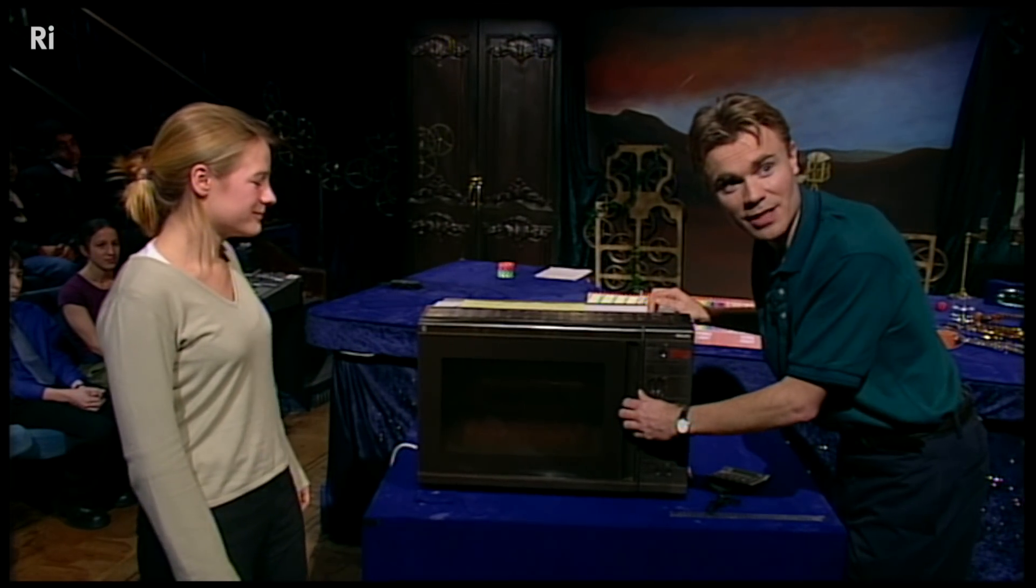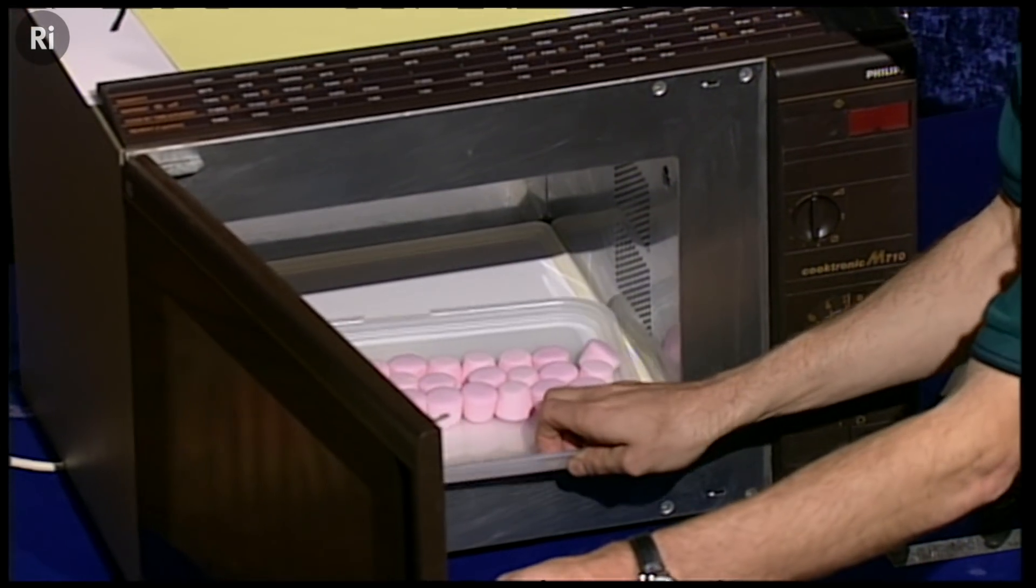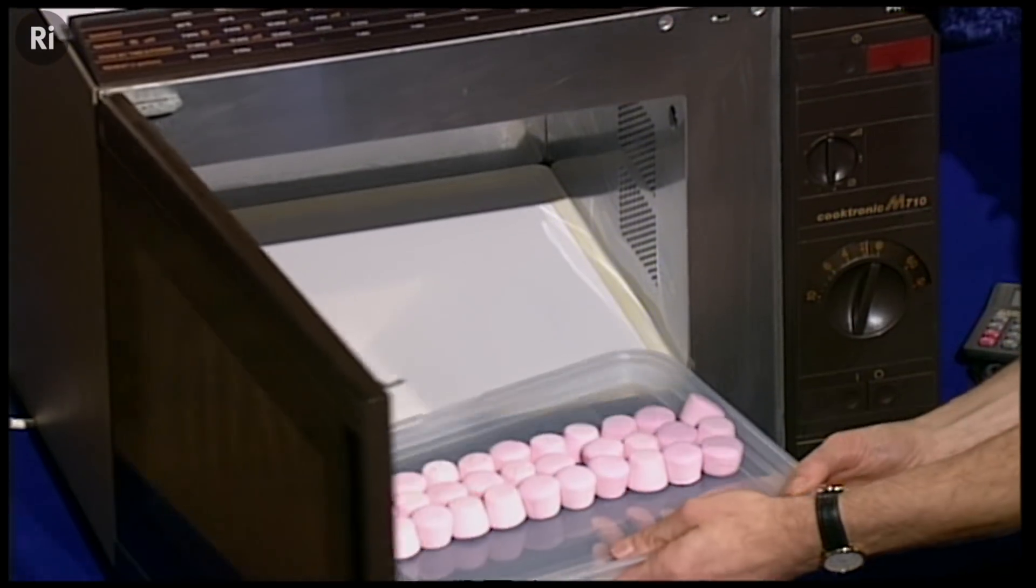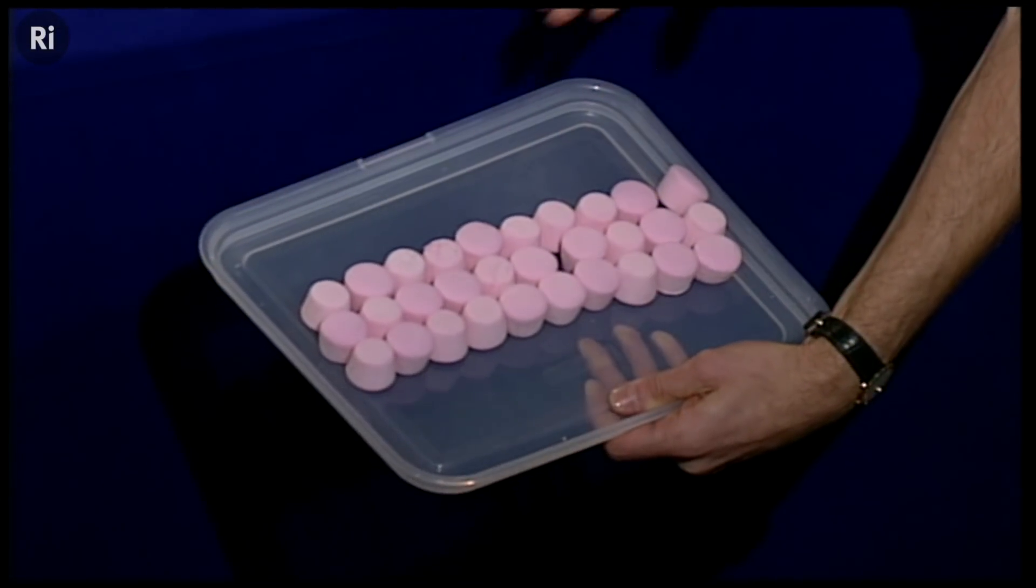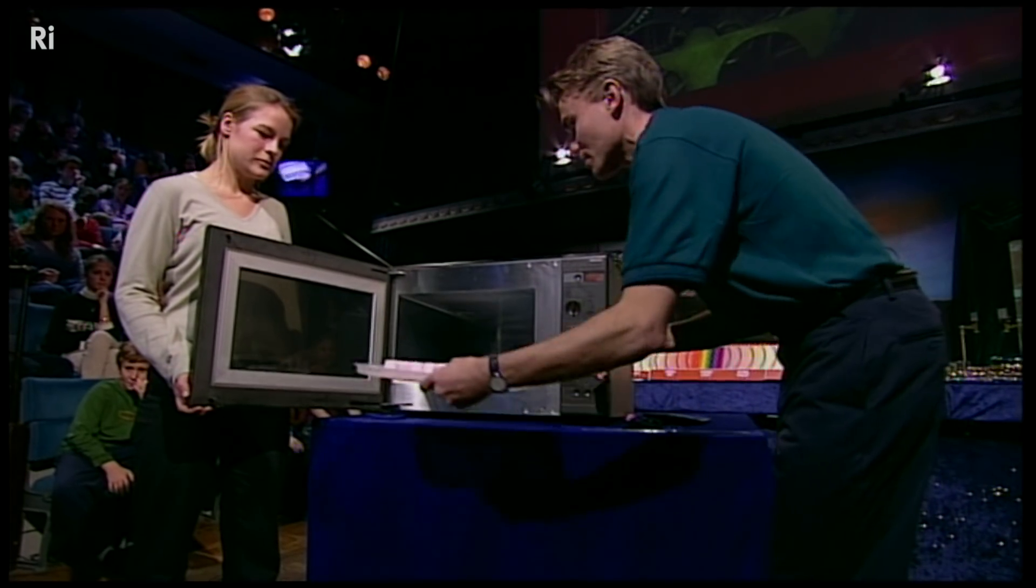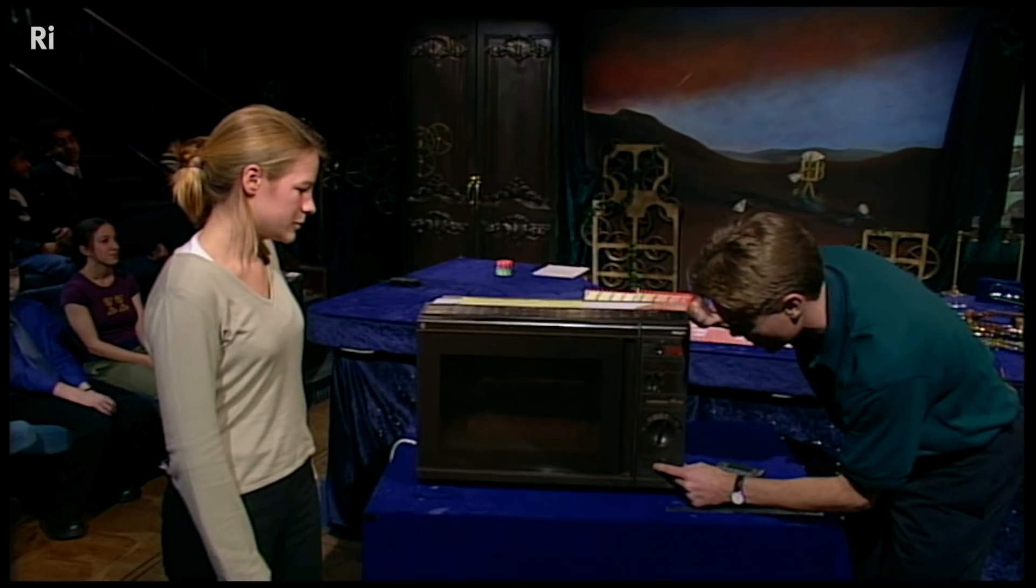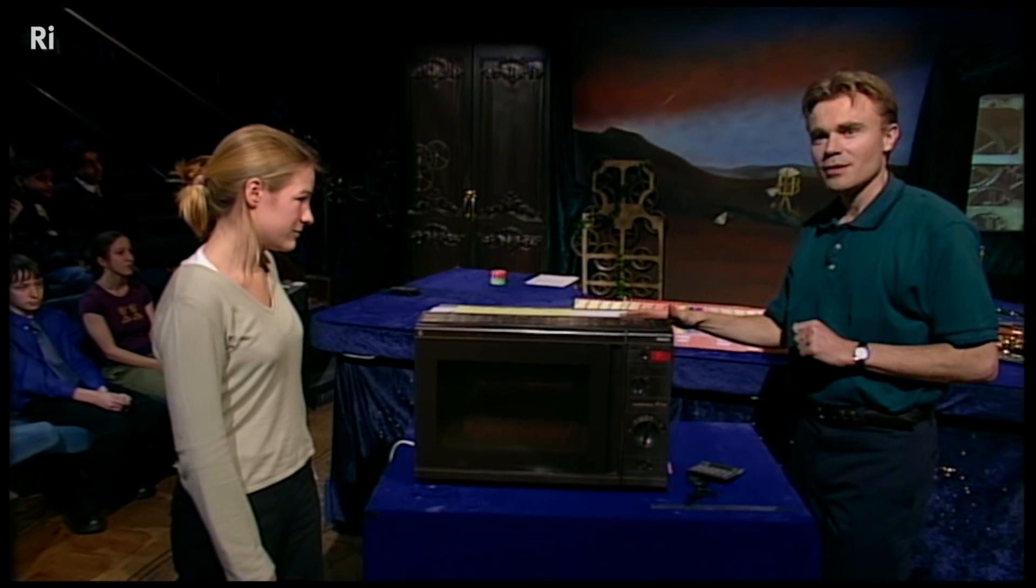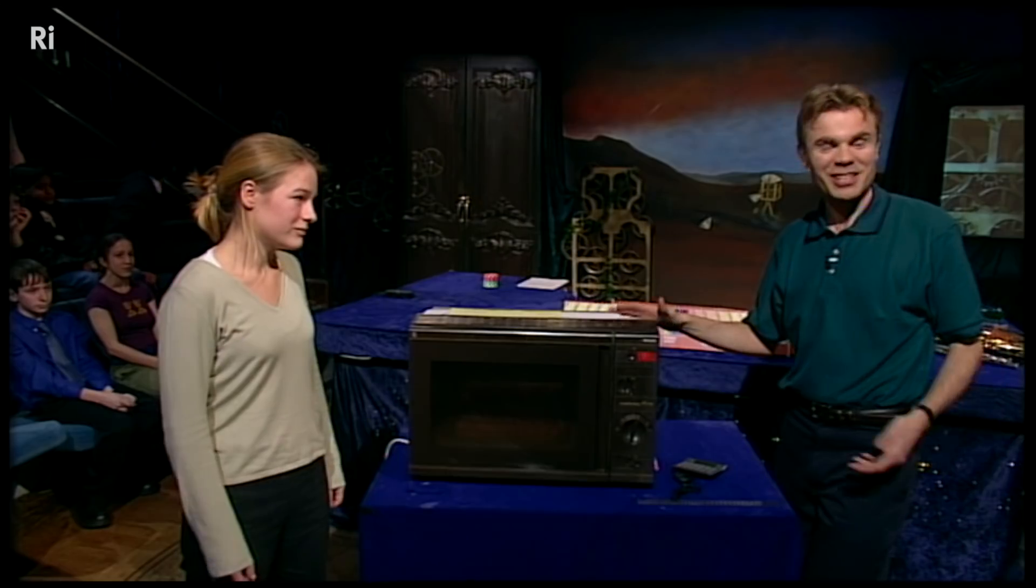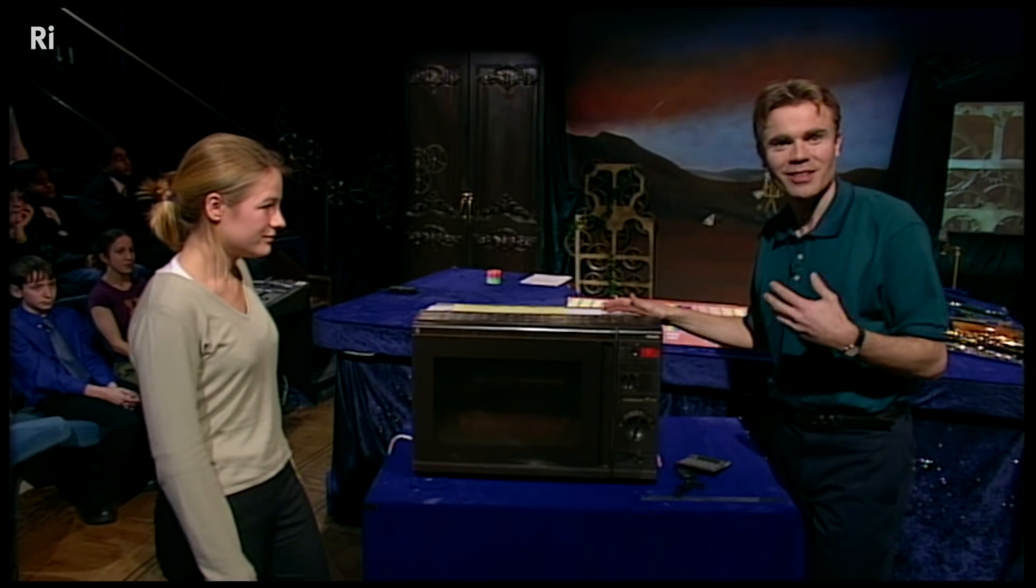What do we need to measure the wavelength of light? A microwave and a dish of marshmallows. And here they are, arranged in a line. And we're going to bung them in the microwave and cook them. So let's just close the door. Now don't try this at home.